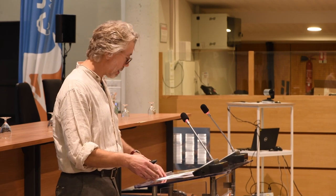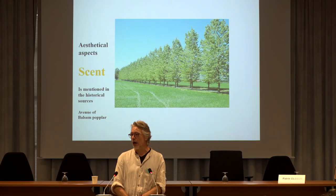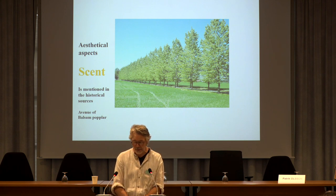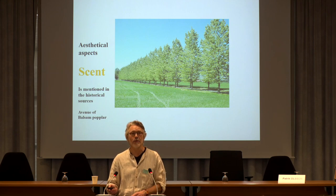Some other aesthetical aspects: color. Today — and yesterday as well — we enjoyed the colorful avenues and the colorful skyline. However, in the historical sources, color is never mentioned. Whereas scent — the scent of the flowers of the trees — is mentioned. I can see that regarding the type of tree, for instance, balsamic poplar or balsam poplar are used as a type of tree in these avenues.